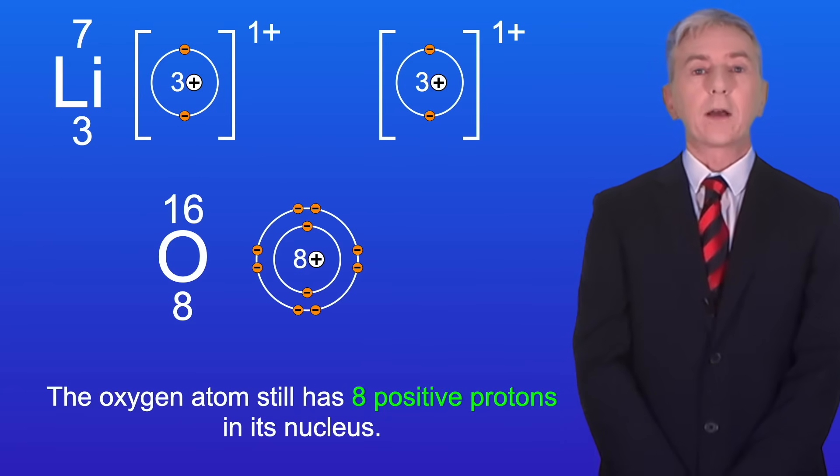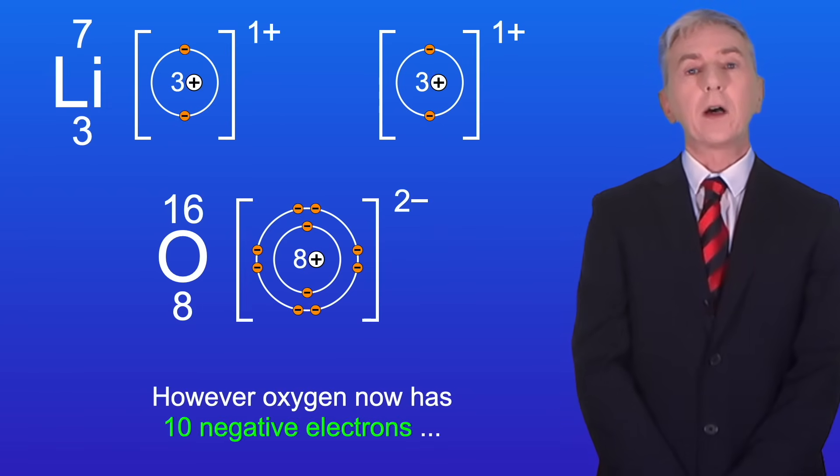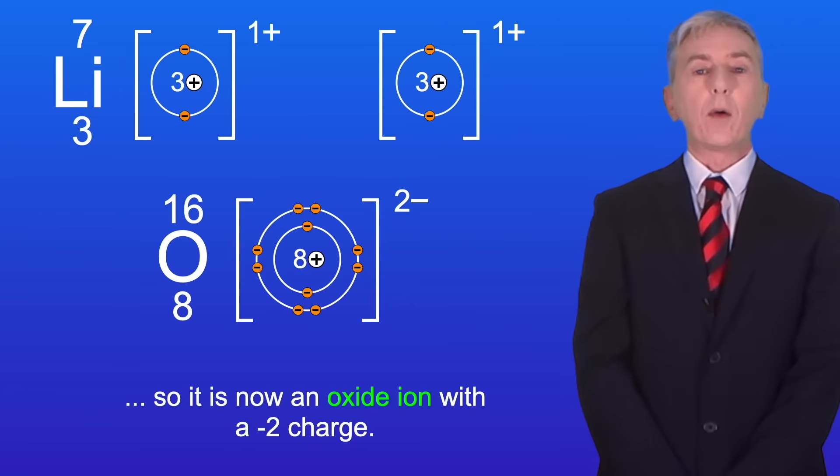The oxygen atom still has eight positive protons in its nucleus. However, oxygen now has 10 negative electrons, so it's now an oxide ion with a negative 2 charge.